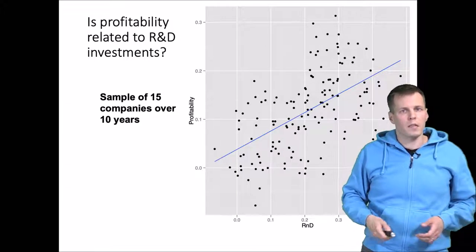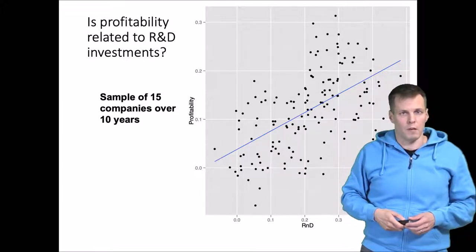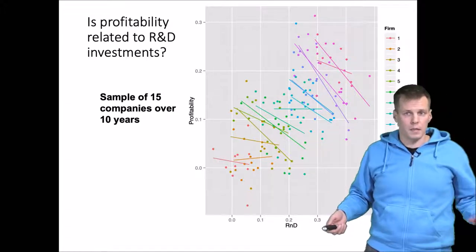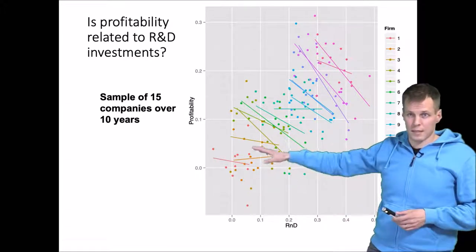What if these are actually repeated observations of the same set of firms? What if we have 15 companies over 10 years? Could be the same thing here.